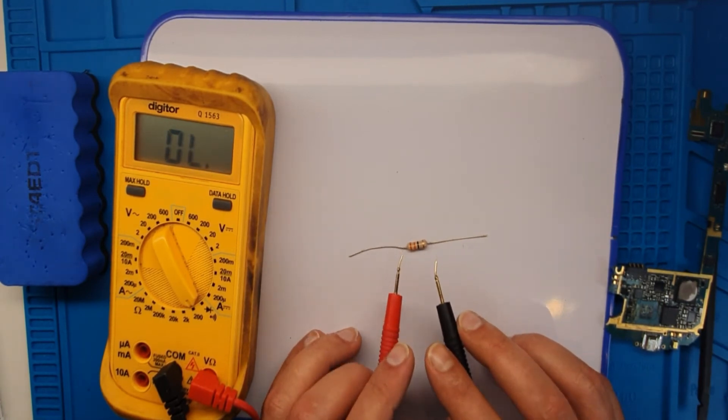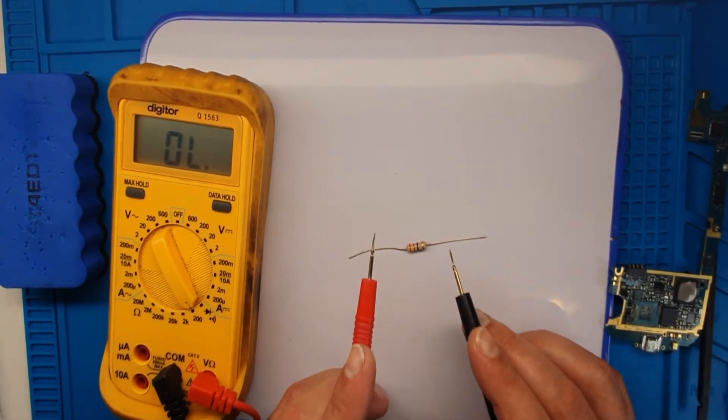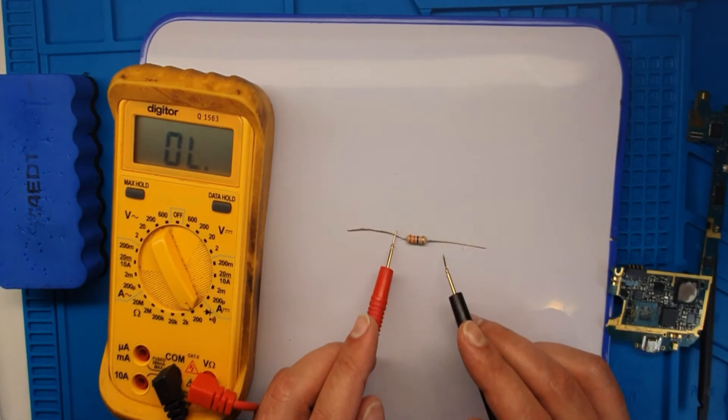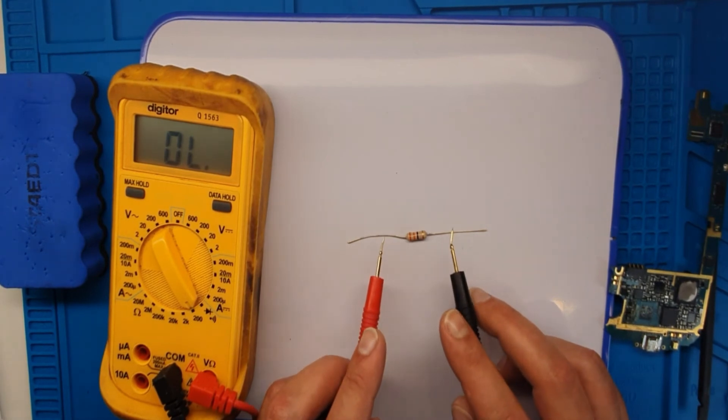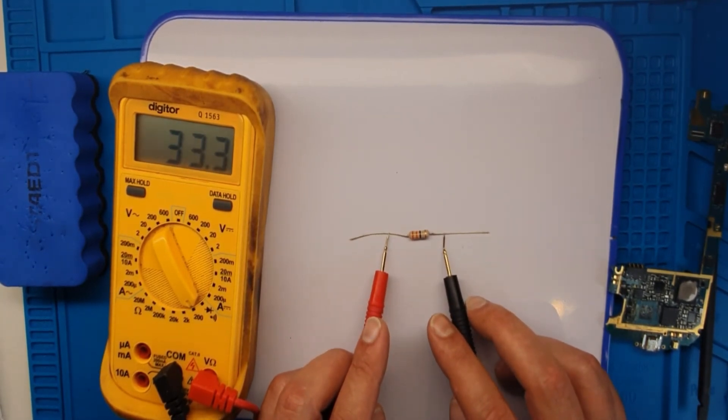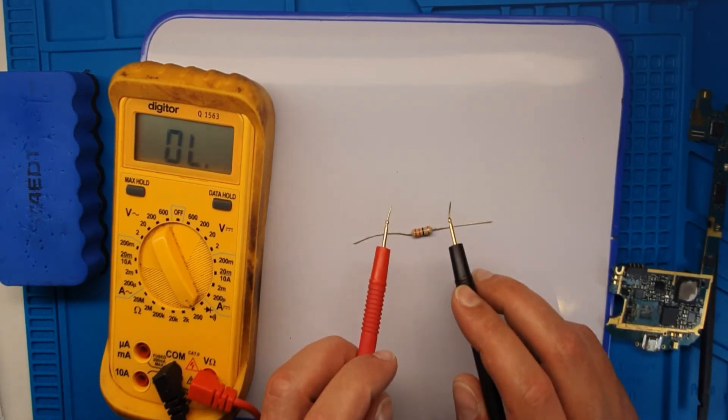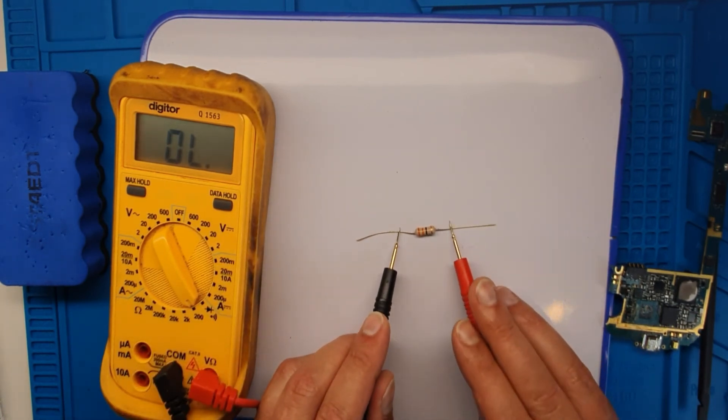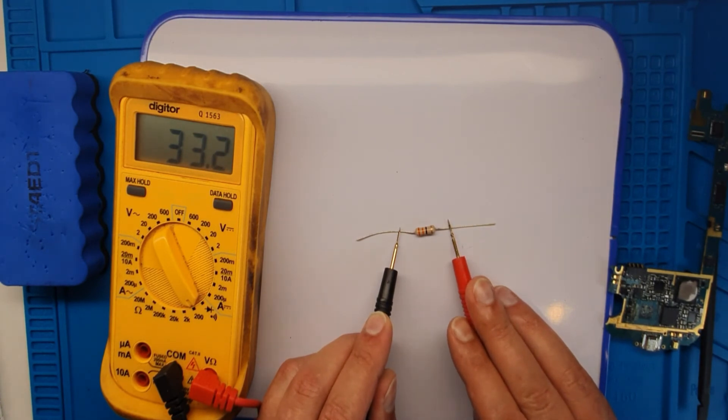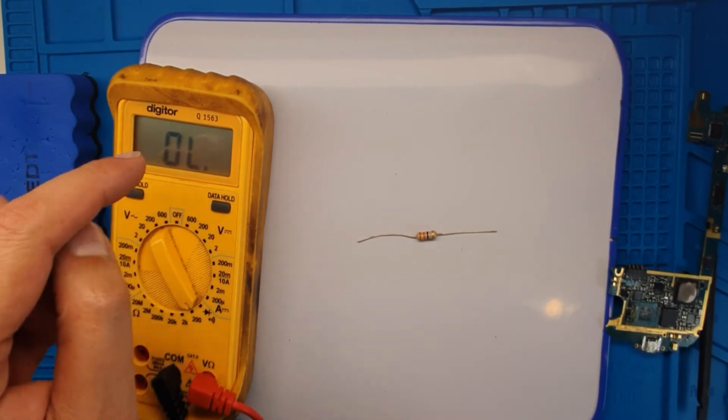This is because in the schematic diagram, sometimes there's a one or five or ten tolerance, so sometimes there's a small difference in capacity. Now swap the cables and put them the other way. It should show you the same ohms. If it shows the same ohm, it means this resistor is working fine.